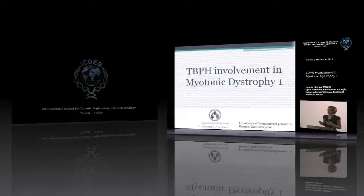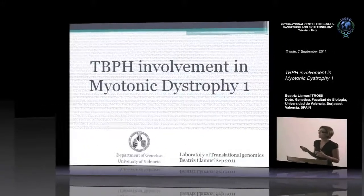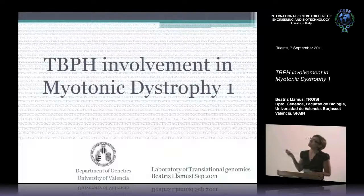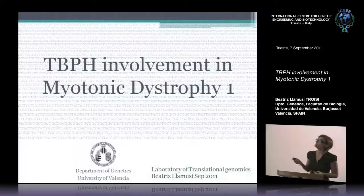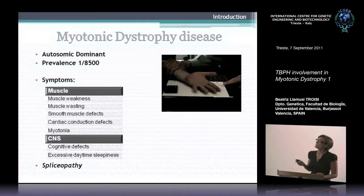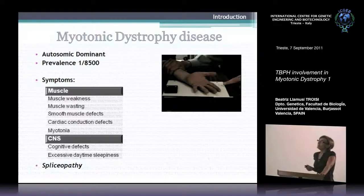I'm coming from the University of Valencia, from the Laboratory of Translational Genomics of Ruben Artero. I'm going to talk to you today about TBPH involvement in myotonic dystrophy, which is an autosomic dominant disease. It's a rare disease and the main symptoms affect muscle and the central nervous system.